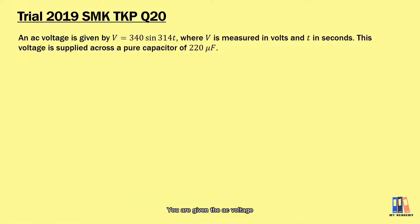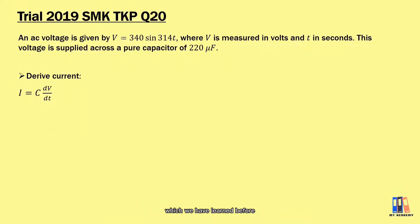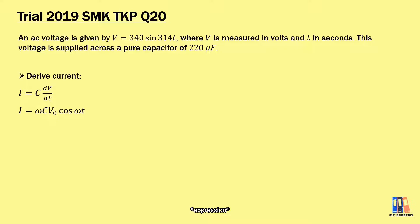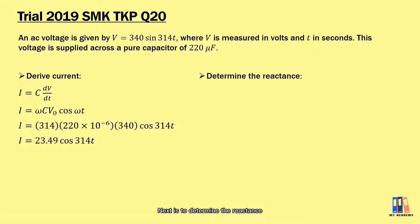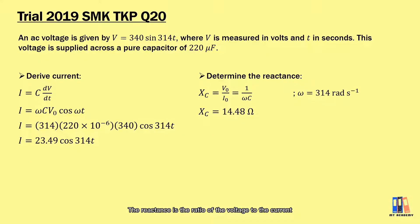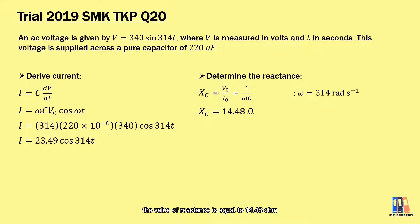Now let's try one example from TKP in 2019. We are given an AC voltage connected to a pure capacitor of 220 microfarad. The first question is to derive the current, which we have learned is equal to C dV/dt. Doing the derivation, you can obtain the current as equal to ωCV₀ multiplied by cos(ωt). Putting in all the values gives current as 23.49 cos(314t). Next, we determine the reactance: the reactance is the ratio of the voltage to the current, or equivalently the reciprocal of ωC, giving a reactance of 14.48 ohms.